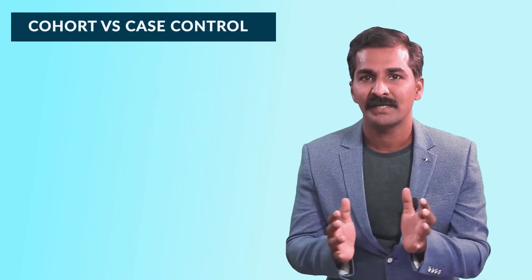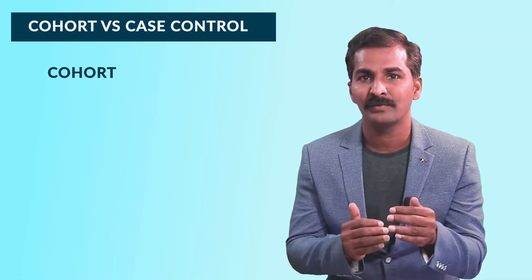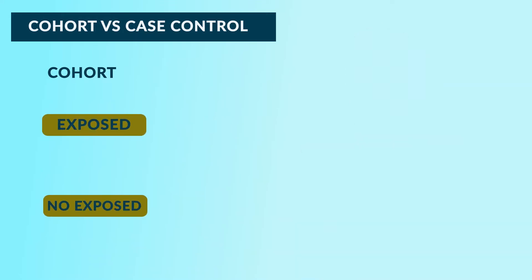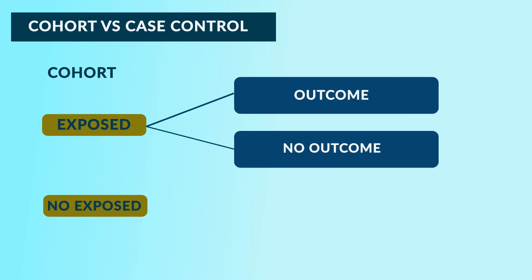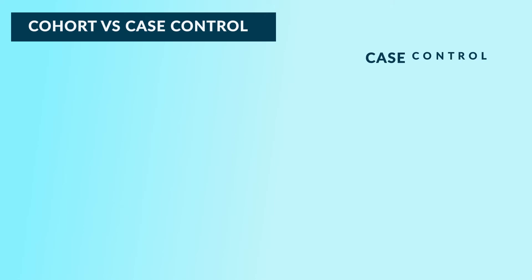The last set of terms needing clear understanding are cohort study versus case control study. There is only one point to remember. In a cohort study, the study groups are categorized based on exposure — exposed and non-exposed groups. You then look at how many in the exposed group develop or do not develop the outcome, and similarly for the non-exposed group, and draw conclusions. Study groups recruited are based on exposure: exposed and non-exposed.